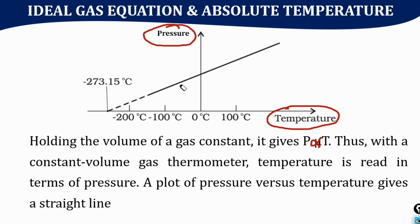When it is extrapolated, it will cut the x-axis at the same value of minus 273.15 degrees Celsius. At this particular point, pressure of a given mass of gas will be equal to zero for a given volume.